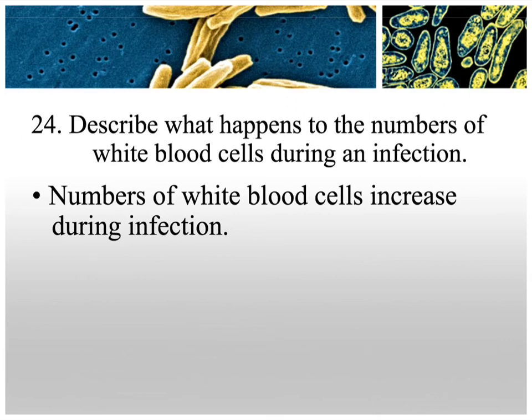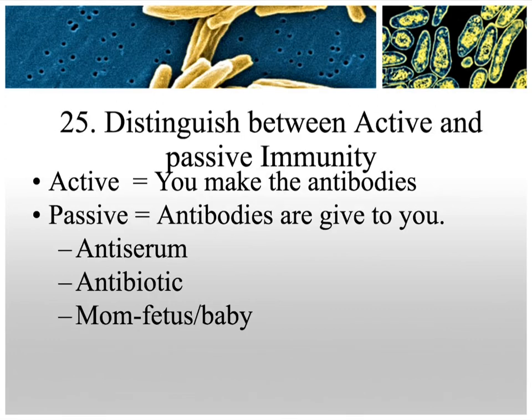The number of white blood cells — leukocytes — increases when you have an infection. Distinguishing active from passive immunity: active means you're actively involved and make your own antibodies; passive means you let things happen — the antibodies are given to you in the form of an antiserum, an antibiotic, or passed from mom to fetus through the placenta, or from mom to baby through breast milk.